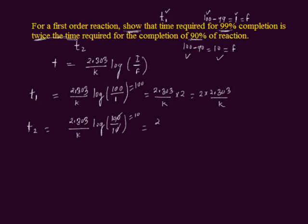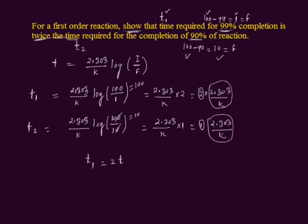Simplifying: 2.303 divided by k multiplied by log of 10, and log of 10 is equal to 1. Therefore t2 equals 2.303 divided by k. Now comparing t1 and t2: t1 is 2 times 2.303/k and t2 is 1 times 2.303/k. The relation between t1 and t2 is t1 equals 2 multiplied by t2. This proves that the time required for 99 percent completion of the reaction, t1, is twice the time required for 90 percent completion, t2.